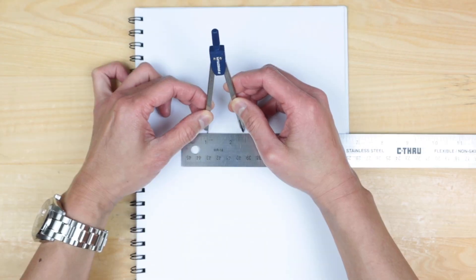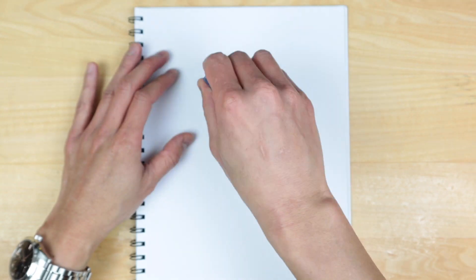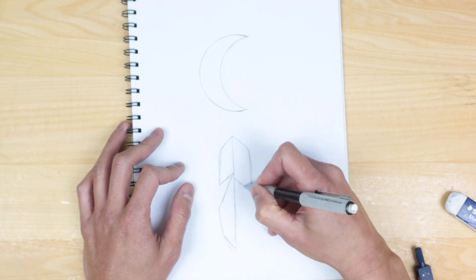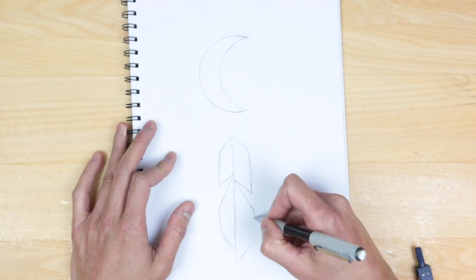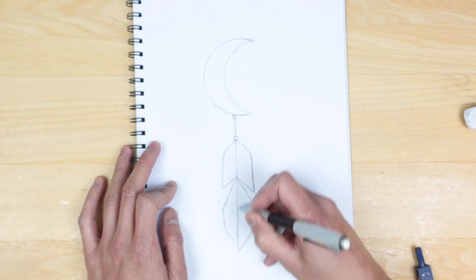We'll start off by using a compass to make the moon. I have mine set to 1.5 inch radius to give us the size that we're working with. As far as the feather goes, I'm taking this from one of my designs from the three feathers but also modifying it a bit and scaling it down to match the moon size.